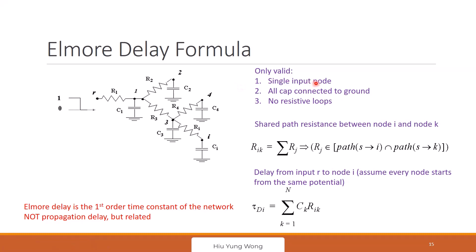First: single input node only. Do not tell me you have signals coming from two places — we cannot use it. All capacitors need to connect to ground. If you have a capacitor connected between node one and three, we cannot use it. Usually we only care about the ground capacitor — wire-to-wire capacitance makes it more difficult. No resistive loops either — you cannot just come back with another resistor loop; we cannot use it in that case.